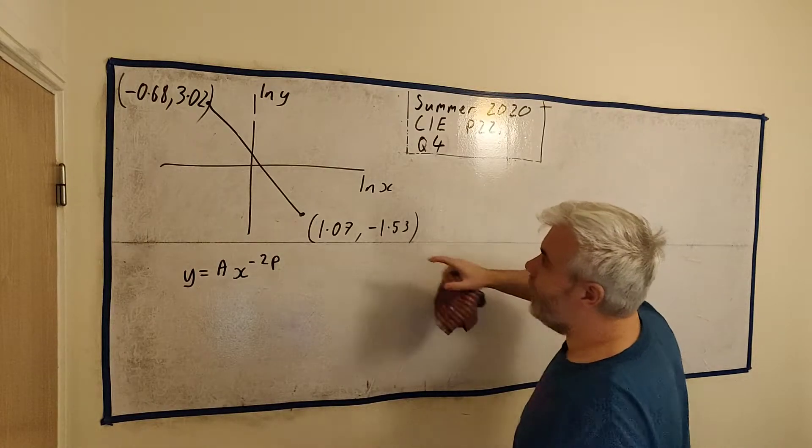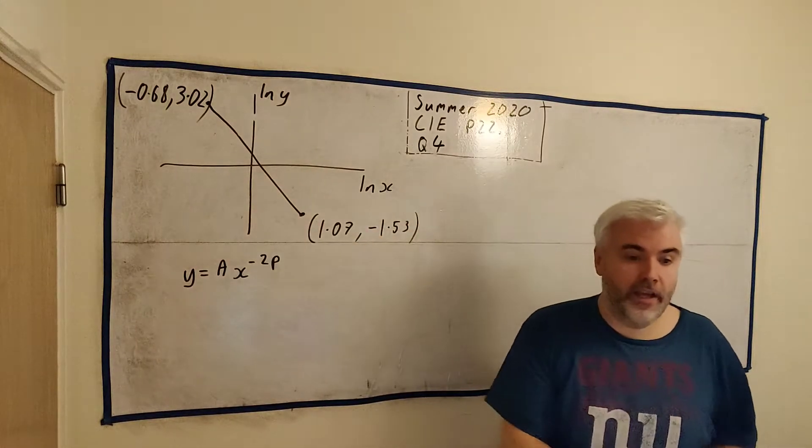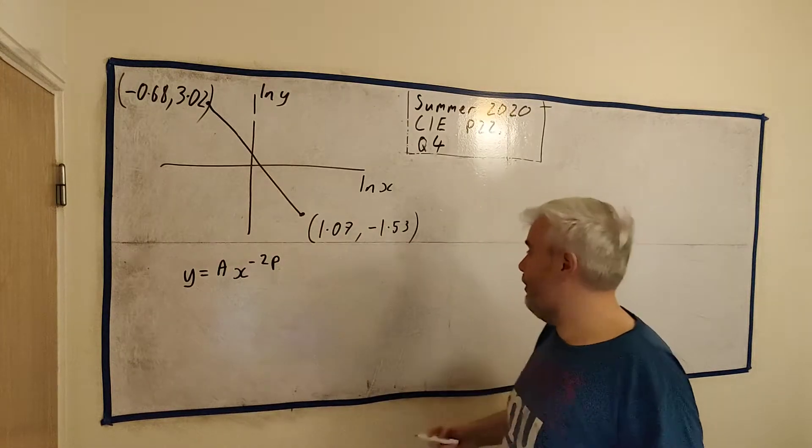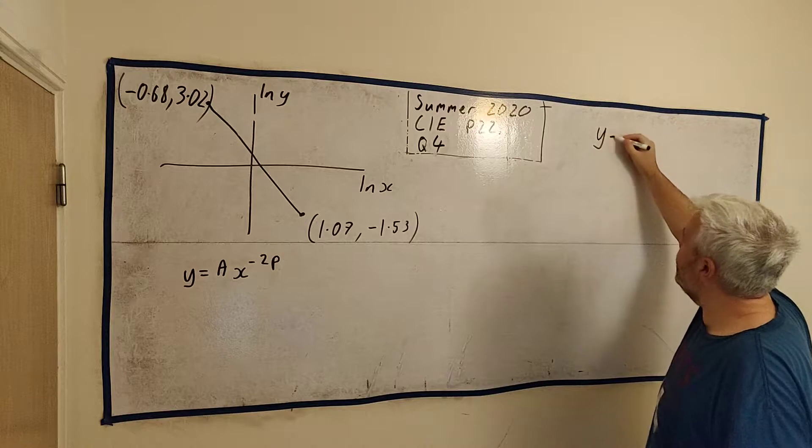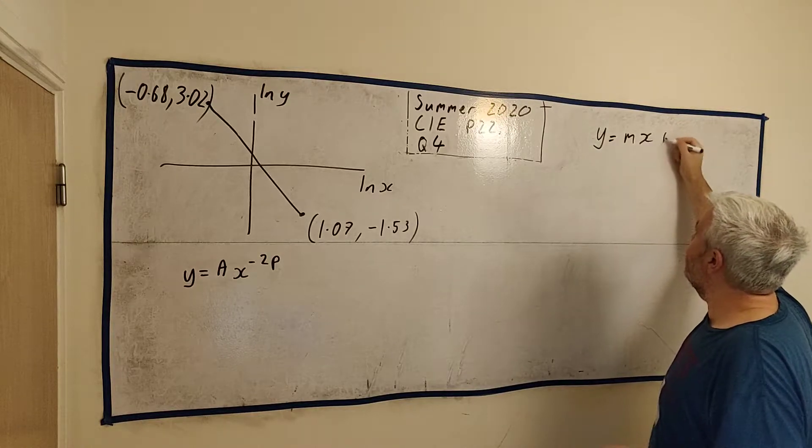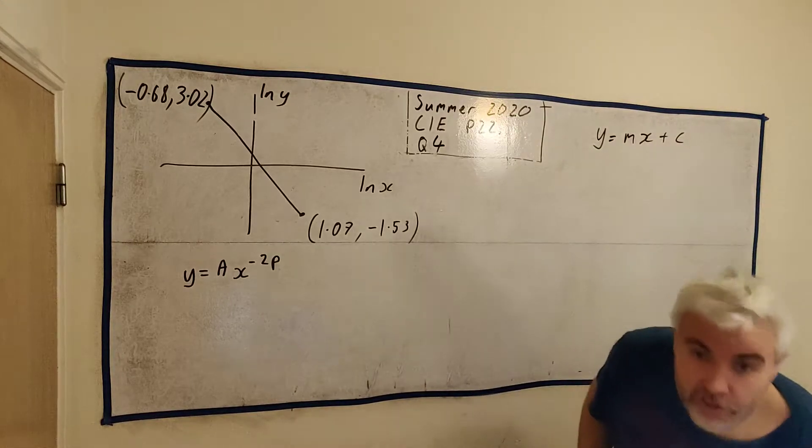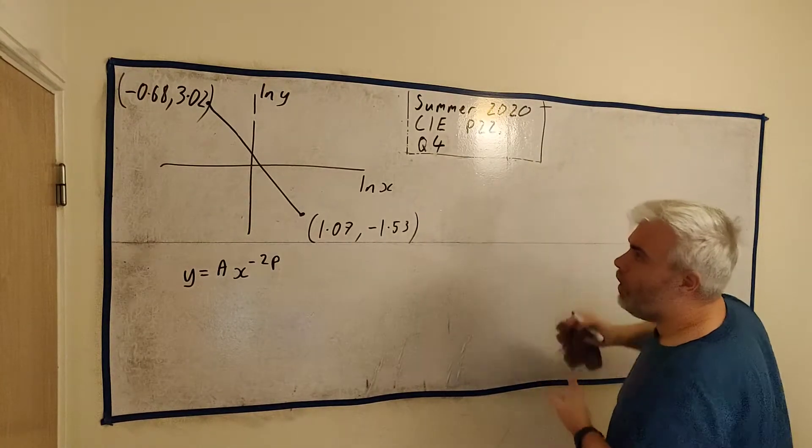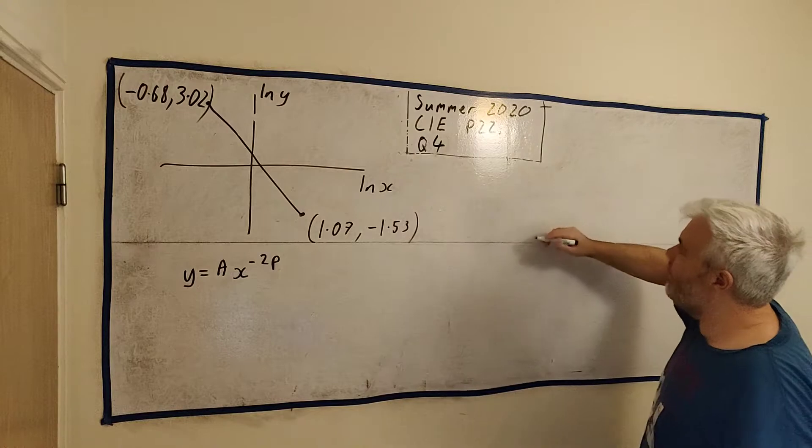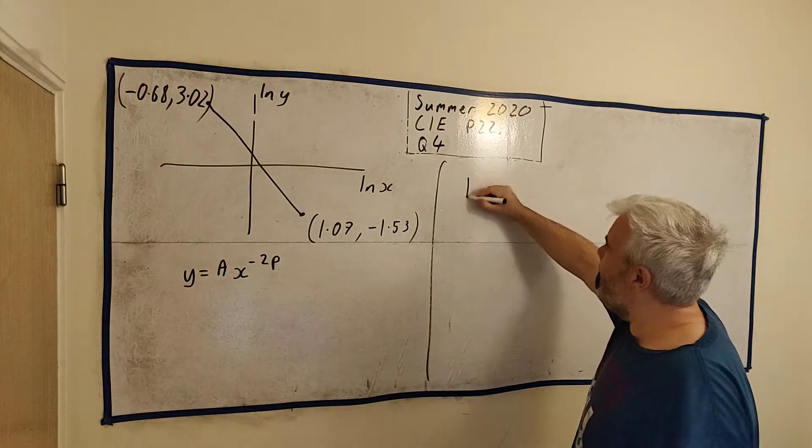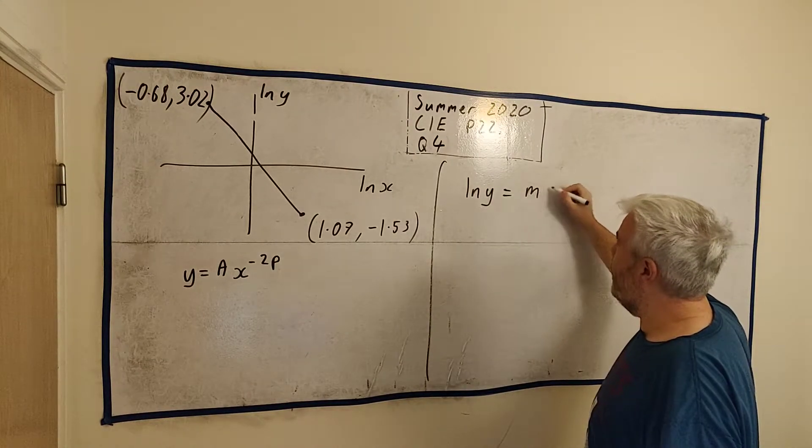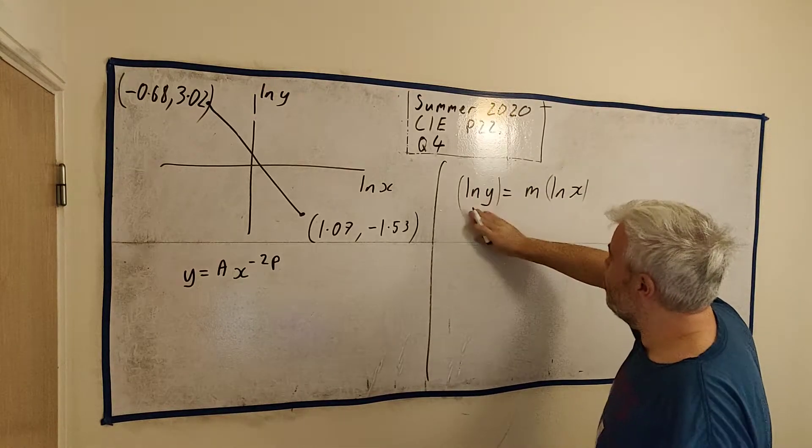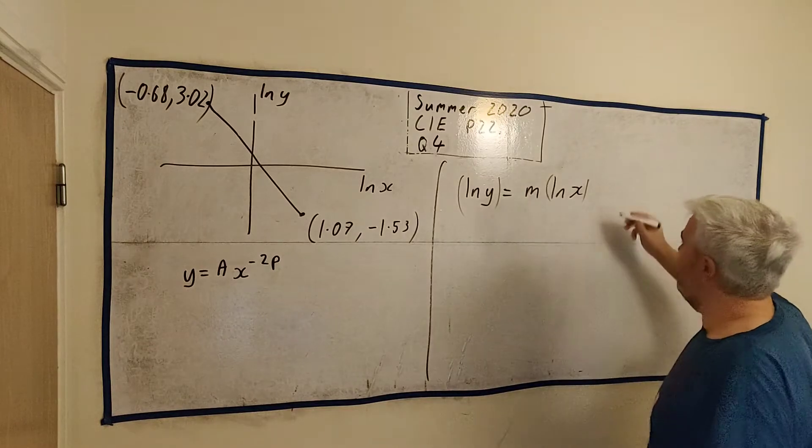I'm going to use the fact that they tell us this is a straight line. It doesn't just look like a straight line. They tell us that this is a straight line. And we know a lot about straight lines. Y is equal to mx plus c. That's what we usually know. Not in this case though, because this isn't xy. In this case what we know is, I'll write it here. Natural log of y is equal to m natural log of x.